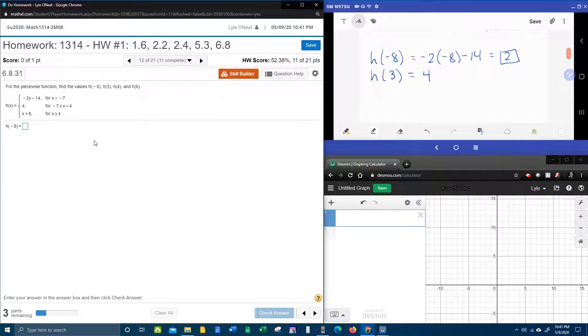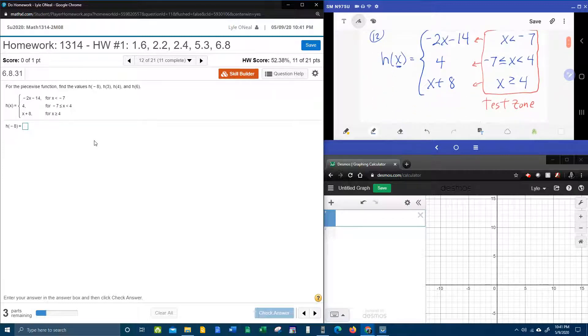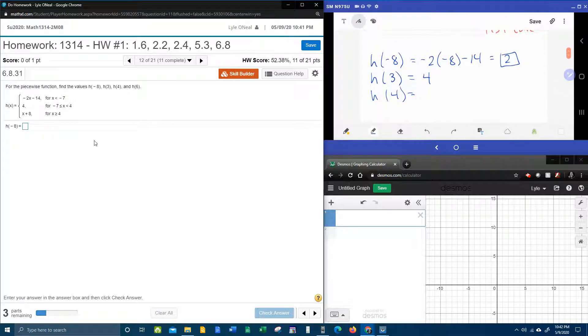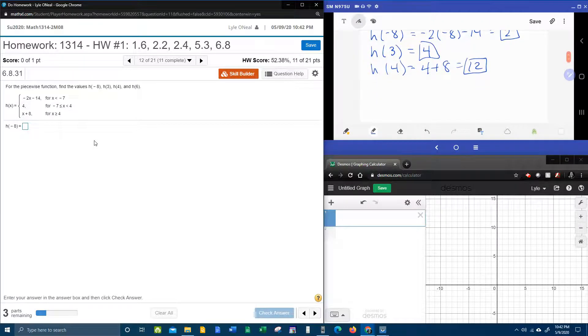Next, h of four to the test zone. Is four less than negative seven? No. Is four strictly less than four? Or is four greater than or equal to four? So now the bottom piece is true, and so now this is what we do. Plugging the four into the bottom, four plus eight is twelve.